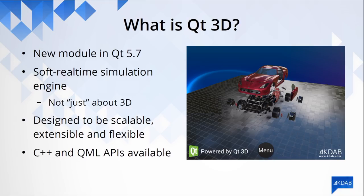We decided to build what is actually a soft real-time simulation engine, which is able to display a 3D scene at 60 frames per second, but it is also more generic than that. This allows us in the future to extend it with further capabilities, such as physics simulation or audio simulation, and also allows application developers to add their own domain-specific aspects into this simulation engine.